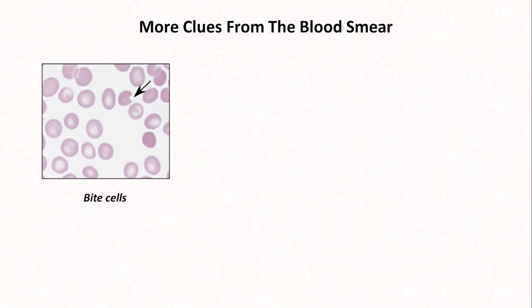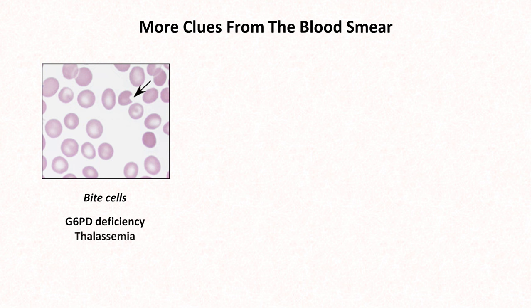Here is an example of a bite cell, which is when the spleen removes part of an erythrocyte. This is most commonly seen in G6PD deficiency, but can also occur in thalassemia.